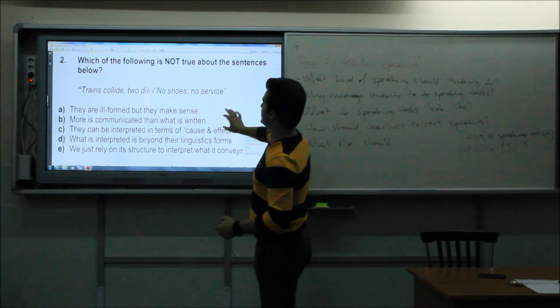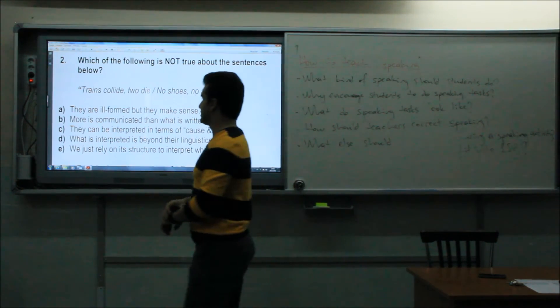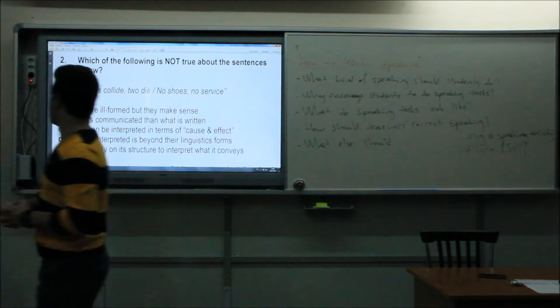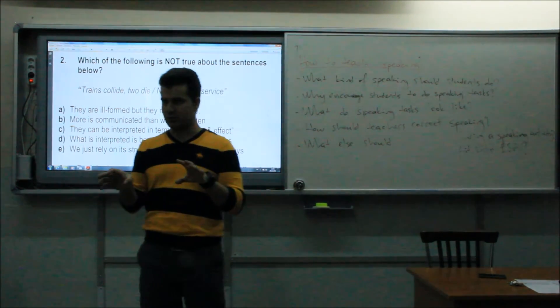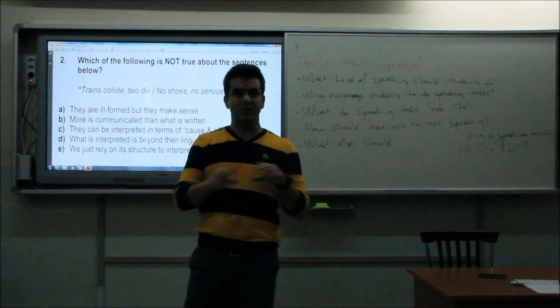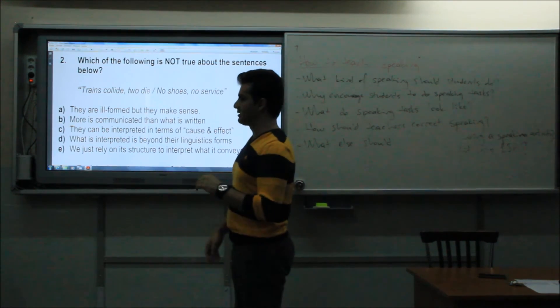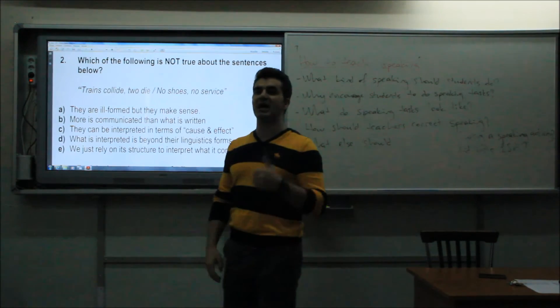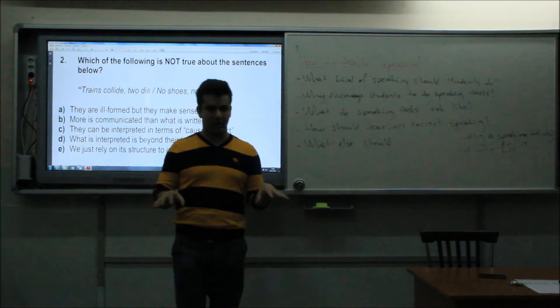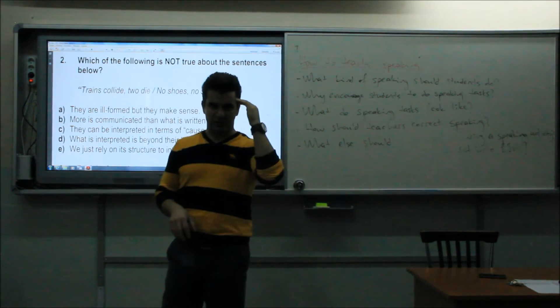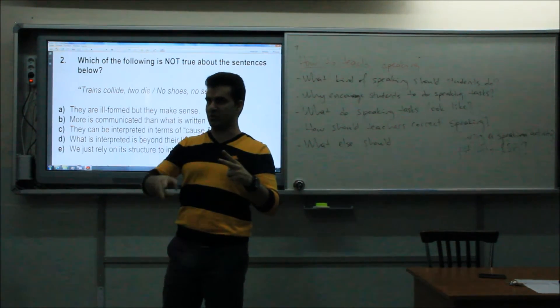This one, for example. Which of the following is not true about the sentences below? Trains collide. Two die. Trains march up. So there is no connection between the two in terms of structure or grammatical. Because as a result of this, trains collided, as a result of the accident, two people died or two people died in that train accident. No connections, alright? But in spite of this, we can understand that two people have died in the accident, as a result of accident.